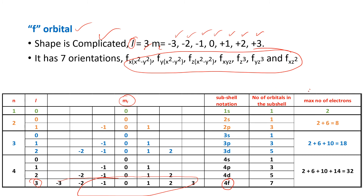We have discussed this summary table in previous lessons. This table provides complete information about the number of shells, subshells, their notations, and the maximum number of electrons. It covers all four quantum numbers — principal quantum number, angular momentum quantum number, and magnetic quantum number — along with their values and the number of electrons.